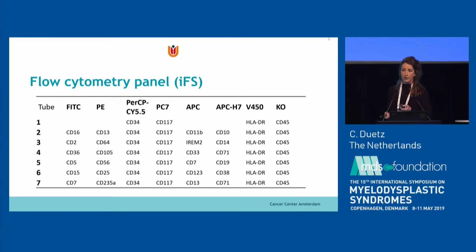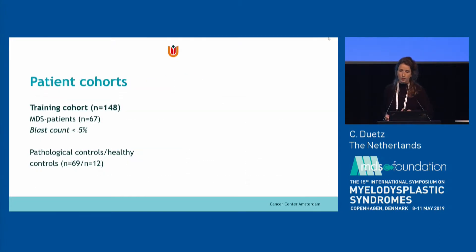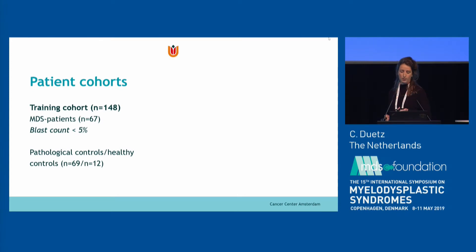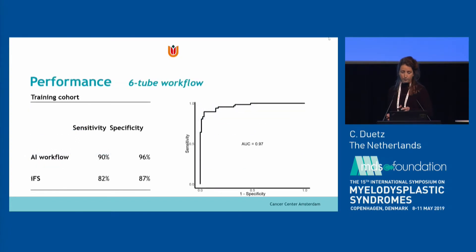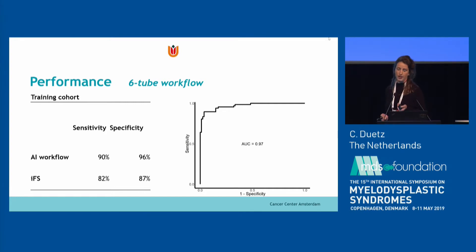We apply this workflow using our integrated flow cytometry score panel — all tubes except tube one, which contains no unique markers. We use a training cohort of 67 MDS patients with low blast count and non-neoplastic controls, optimized via five-fold cross-validation, and validated on a validation cohort of 57 patients with the same characteristics. In the training cohort using all six tubes, we achieved 90% sensitivity and 96% specificity with an AUC of 0.97, compared to 82% sensitivity and 87% specificity for the integrated flow cytometry score.